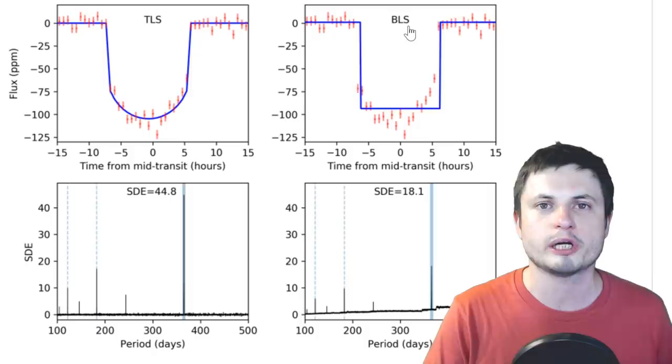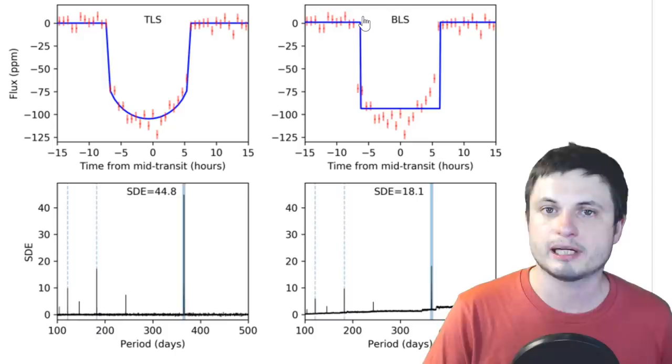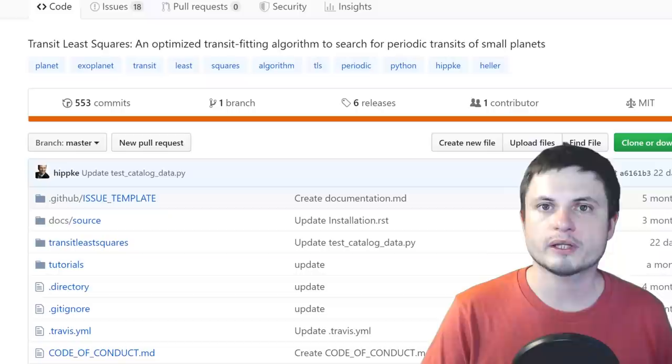In other words, the way that we used to find planets is by having an actual program that looks for these dips, but it looked at them in a very square fashion. But the new algorithm that was used for this particular discovery is based on this freely available python program known as transit least squares.